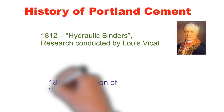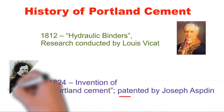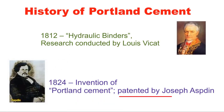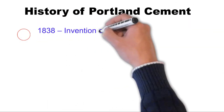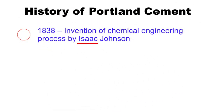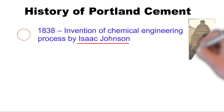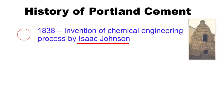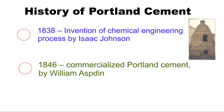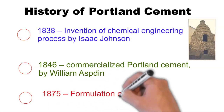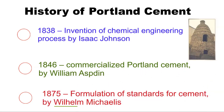In 1824, Joseph Aspdin invented cement and patented it as Portland cement. Soon after, in 1838, Isaac Johnson adopted chemical engineering processes for the development of Portland cement. In 1846, William Aspdin, the son of Joseph Aspdin, commercialized Portland cement in Europe. Then in 1875, Michelle formulated standards for cement.